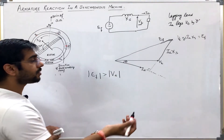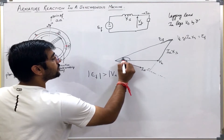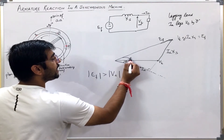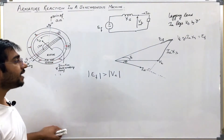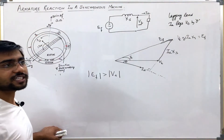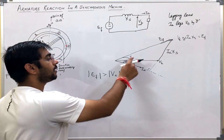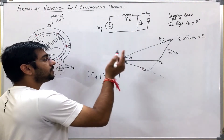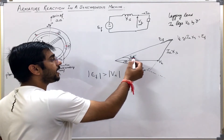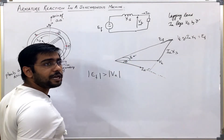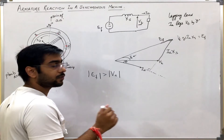Now, we also see that for the generator, EF will always be leading Vt by some angle which is known as the power angle or torque angle called delta. We will see that this delta angle is very important in power system stability studies also.